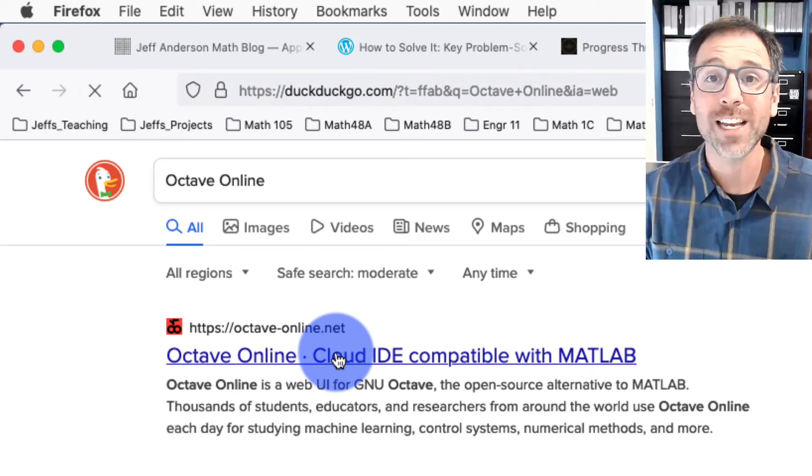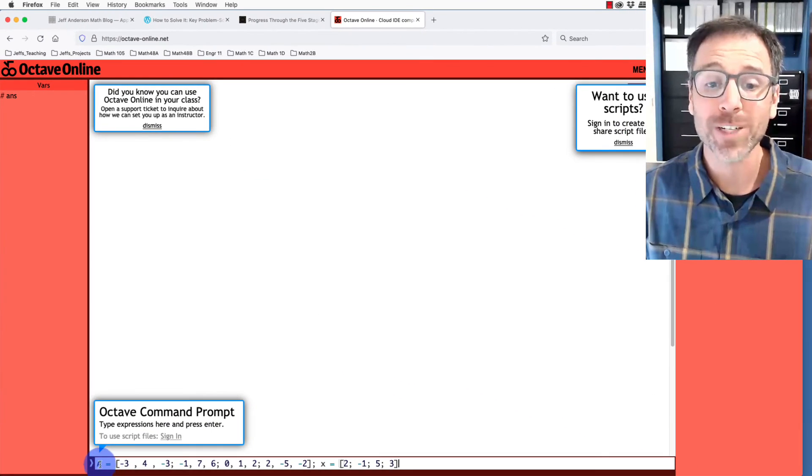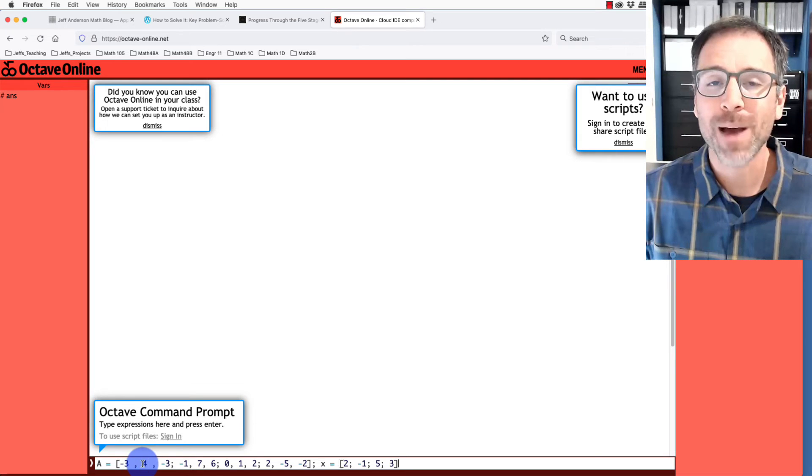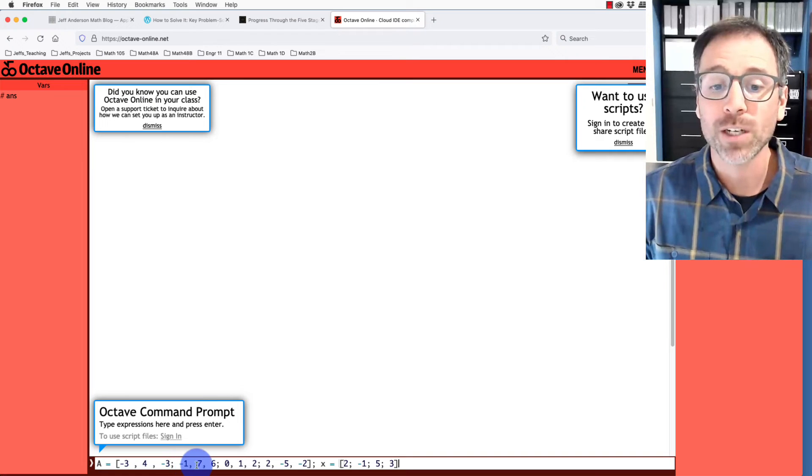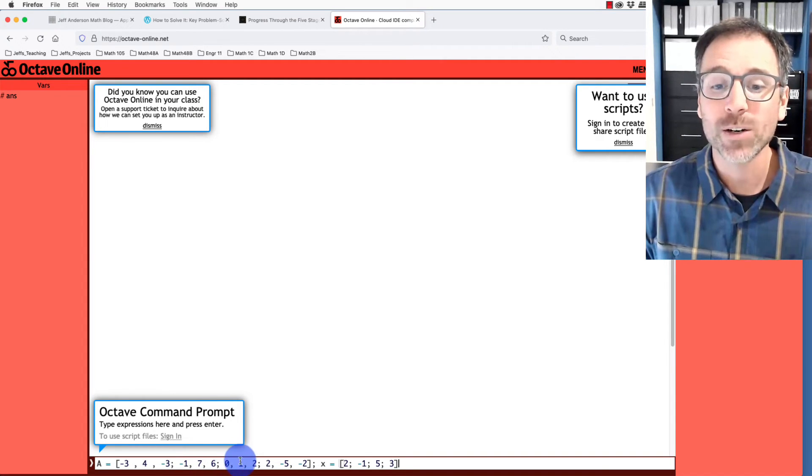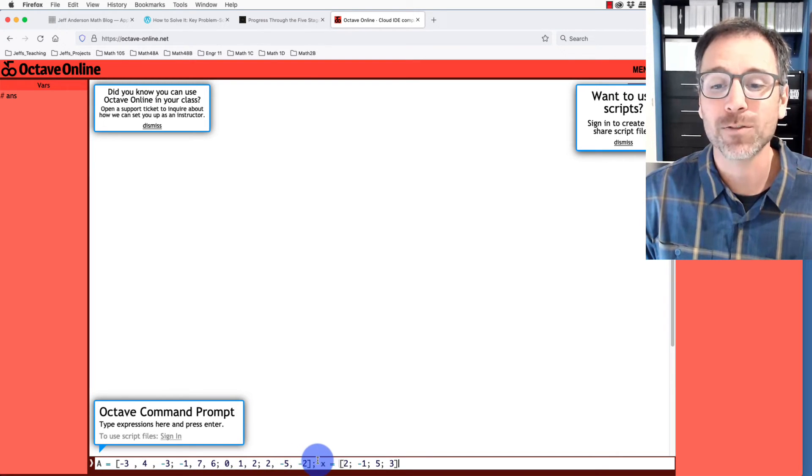Of course, the other thing that we can do is use Octave Online, which is our online matrix calculator equivalent to MATLAB. To do that, we'll store the matrix A and the vector x. To store A, remember that when we write the entry-by-entry definition, we break up the columns by commas and the rows by semicolons. So here we say A gets negative 3, 4, negative 3. Then we say semicolon down to the next row, negative 1, 7, 6, semicolon down to the next row, 0, 1, 2, semicolon, 2, negative 5, negative 2. And then when we put this semicolon, it suppresses the output.